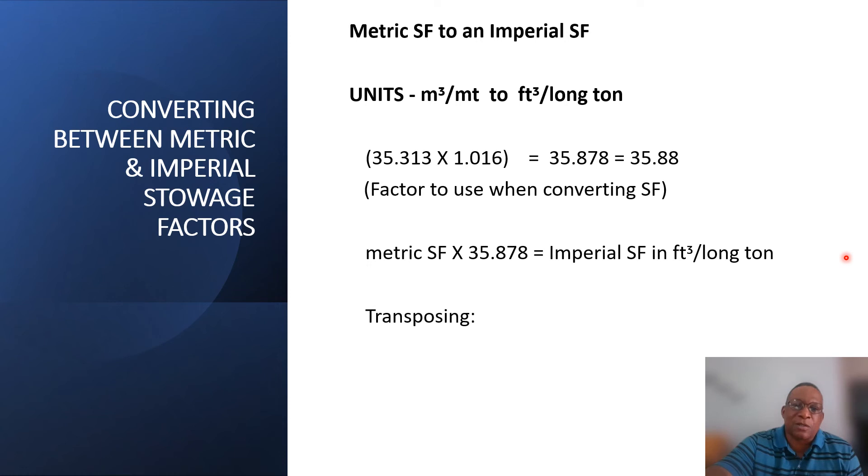So if you have a metric storage factor and you want to bring it to an imperial stowage factor, you would multiply by the 35.878. Likewise, you can transpose, and if you want the storage factor to be metric and you are given the storage factor in imperial values, then you will divide that by the 35.88 when you are converting.